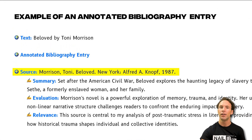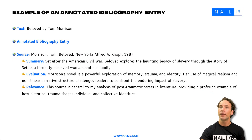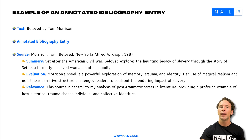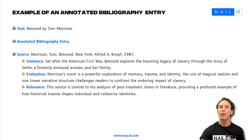Morrison, Tony. Beloved. New York: Alpha Day Not, 1987. The summary: set after the American Civil War, Beloved explores the haunting legacy of slavery through the story of Sethe, a formerly enslaved woman and her family. The evaluation: Morrison's novel is a powerful exploration of memory, trauma, and identity. Her use of magical realism and non-linear narrative structure challenges readers to confront the enduring impact of slavery. The relevance: this source is central to the analysis of post-traumatic stress in literature, providing a profound example of how historical trauma shapes individuals and collective identities.